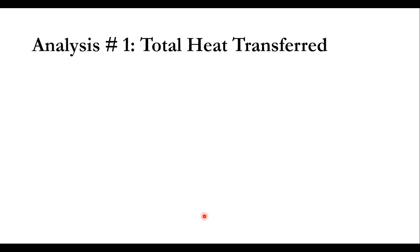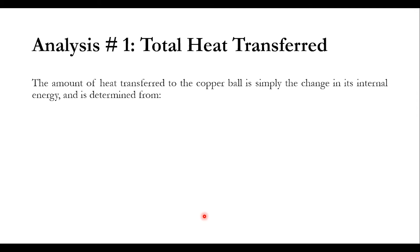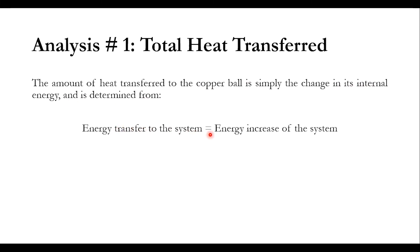First we will calculate the total heat transferred to the copper ball to increase its temperature from 100 to 150 degree centigrade. From the first law of thermodynamics, the total heat transferred to a system equals the change in its internal energy. So Q equals delta U, and delta U equals m·c·(T2 − T1), where m is mass, c is specific heat, T2 is final temperature, and T1 is initial temperature.